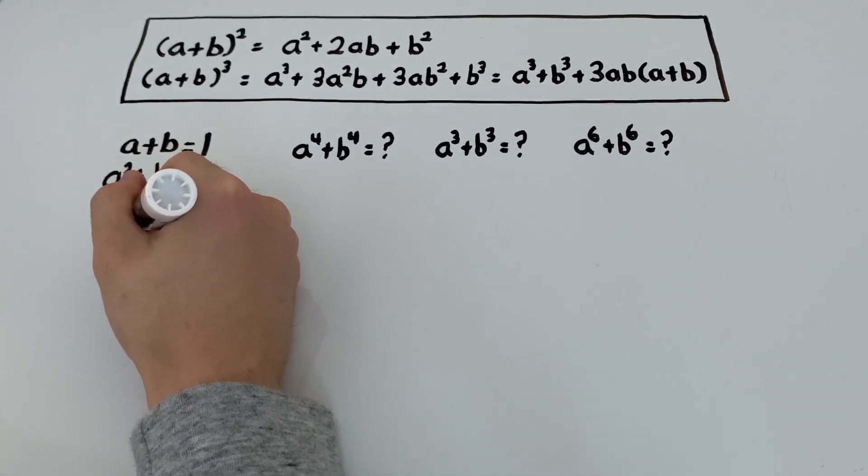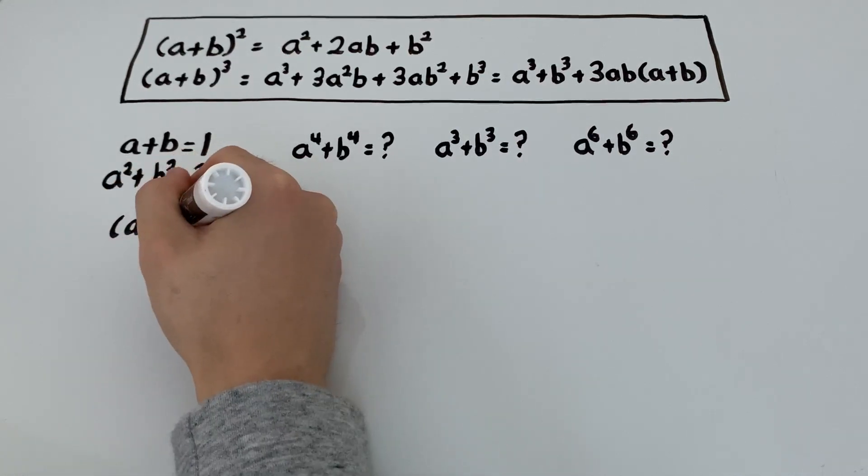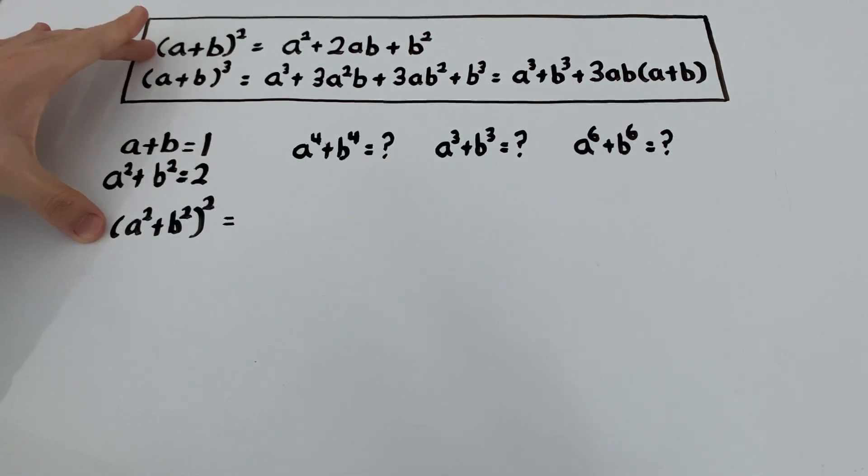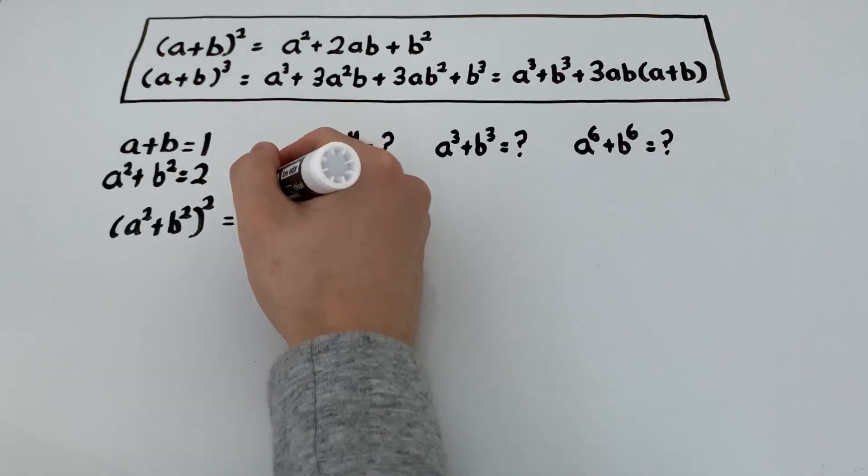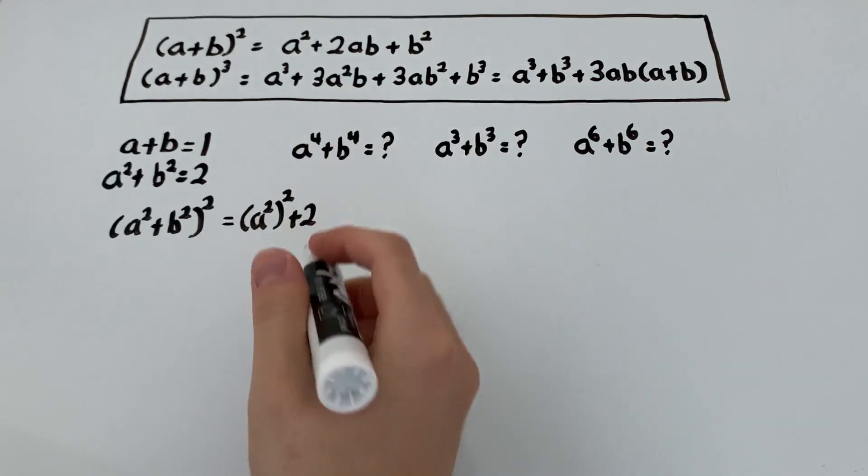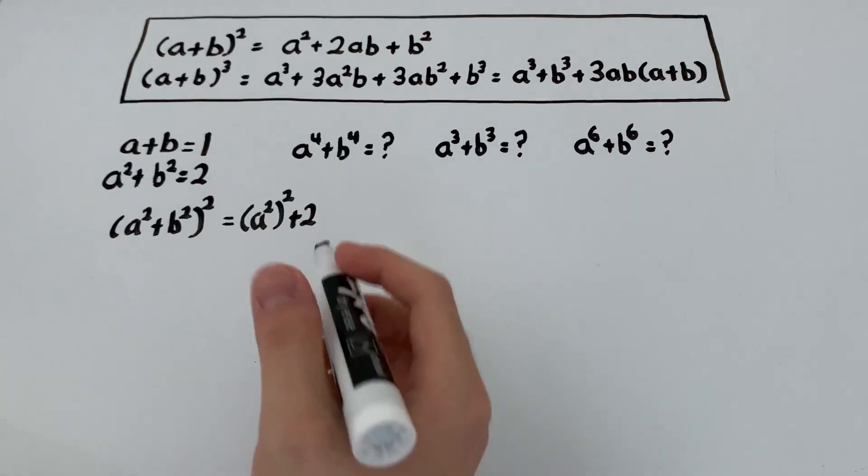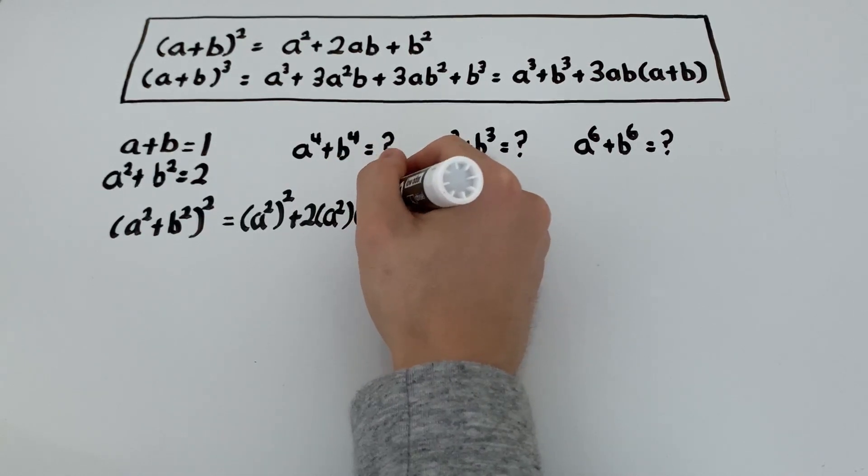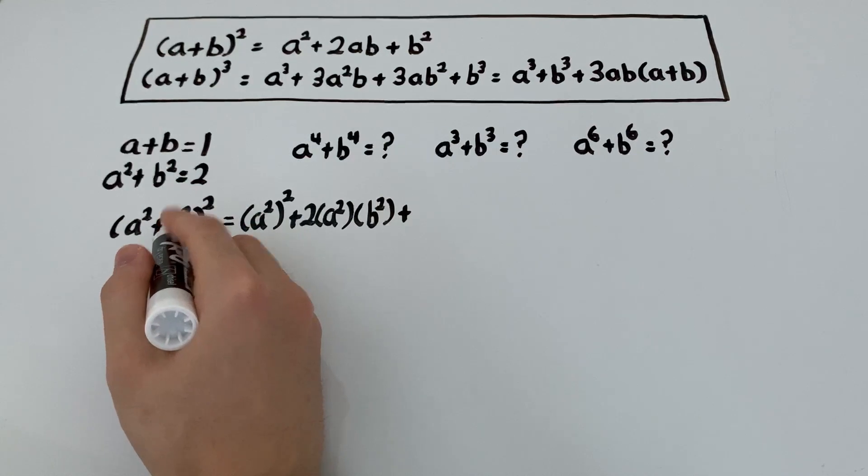So a squared plus b squared squared. Now, if we compare this with the top identity, I probably should have used something other than a and b. I apologize for that. But basically, all it's saying is first, we need to square the 1st term. So that's the 1st term squared. Then, we need to add twice the product of each term in the parentheses. And then, finally, we need to square b squared.